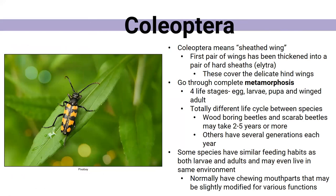Most if not all Coleoptera go through what we call complete metamorphosis. From the time they are an egg to a larva, to pupa, and to winged adults — there are four stages. Other animals like grasshoppers or praying mantises only go through three stages; they skip the pupa stage and instead go through instar stages where they just get slightly bigger each time. Complete metamorphosis is something unique to this group of insects, but the way they do it is very different between species. Some have several generations per year, where others have only one.